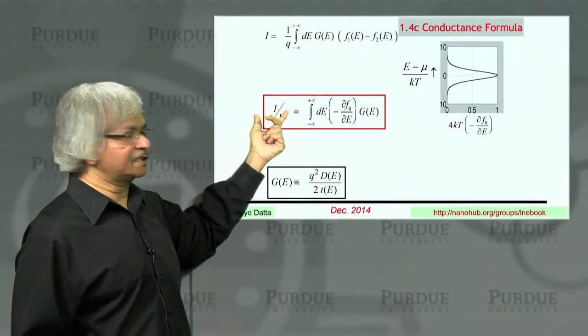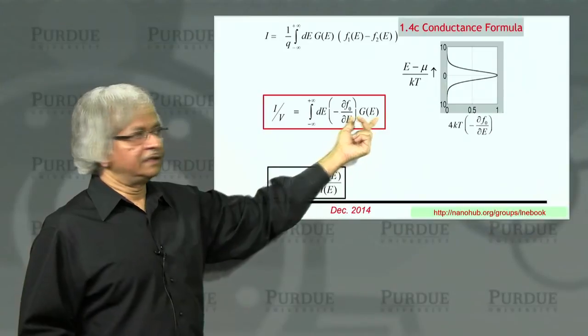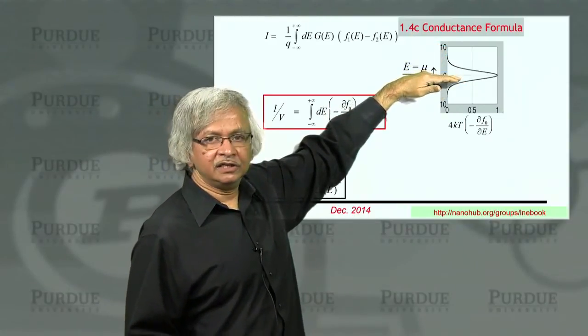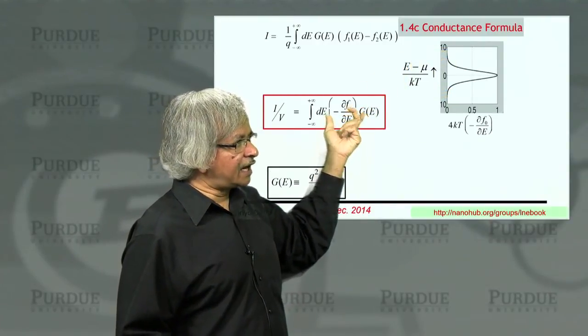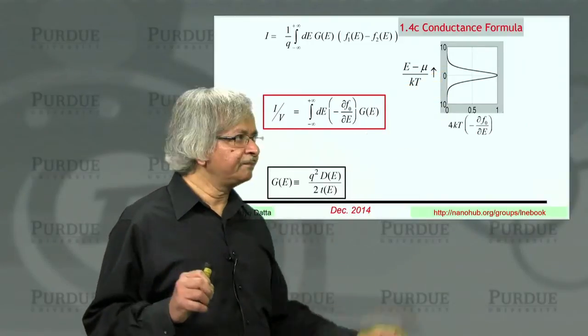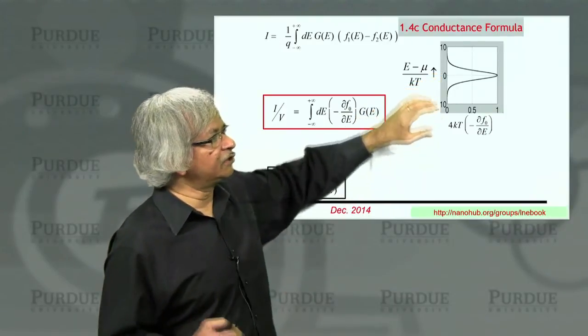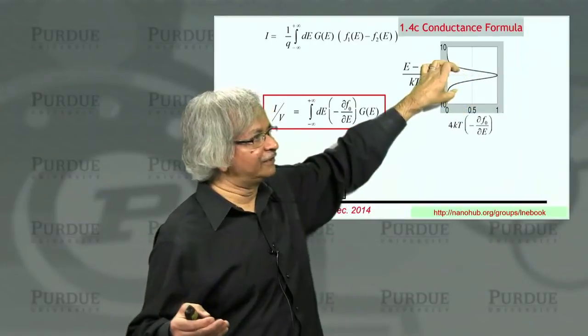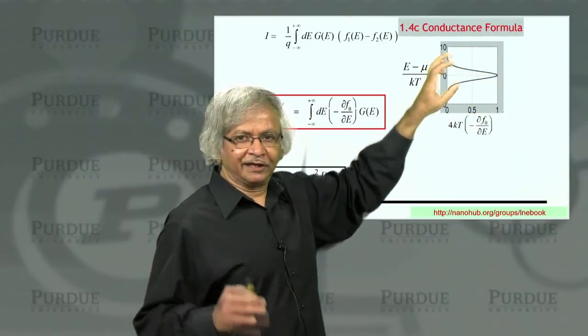And what it tells you is that the measured conductance, this current over voltage, is like an average of this conductance function, in the sense that you multiplied by del f del E - this quantity which I had shown before, which has a peak right around E equal to μ and then dies out. So when you find the observed conductance, it is largely determined by the value of the conductance at E equal to μ. In fact, at zero temperature, it is essentially just this conductance at that energy, because at zero temperature this function is very strongly peaked - the peak value is 1 over kT, width is kT. So as T tends to zero, it becomes infinitely tall and rather thin, like a delta function.